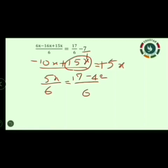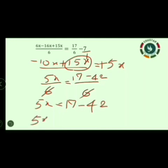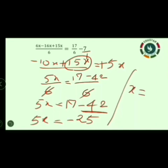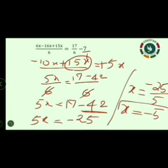Both sides have denominator 6, so we cancel them. 5x is equal to 17 minus 42. Different signs, so subtraction: the greatest number 42 is negative, so the answer is minus 25. Therefore x equals minus 25 divided by 5. Cancelling by 5, the value of x is minus 5.